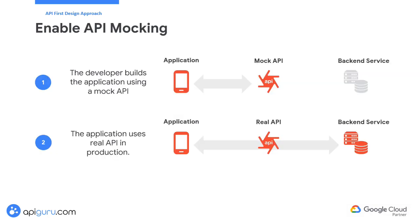Mocking and testing are pivotal elements in the API-first design approach. They are crucial in ensuring the API meets its intended requirements and functions correctly before full-scale implementation. By simulating and validating the API design through mocks and tests, teams can identify and resolve issues early, improve collaboration, and enhance overall system reliability. Mocking involves creating simulated versions of the API based on the design specifications. These mock implementations mimic the behavior of the actual API but are not connected to a live backend or database.